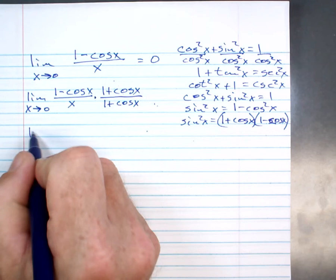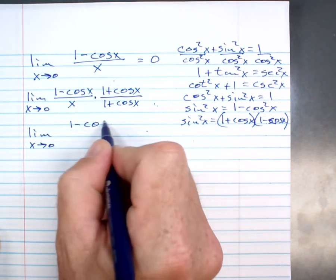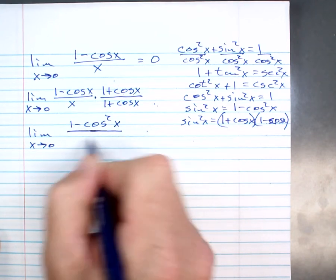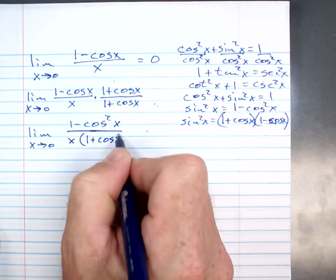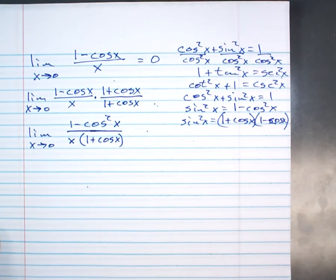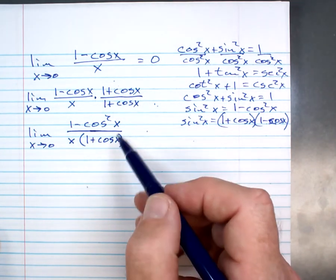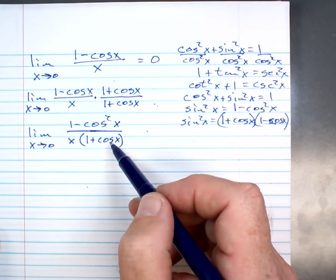My next step is to write the limit as x approaches 0 of 1 minus cosine squared x over x times parentheses 1 plus the cosine of x. I'm going to pause here. Any questions how I went from this line to this line?